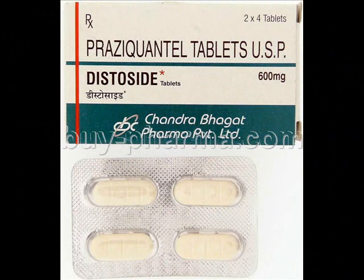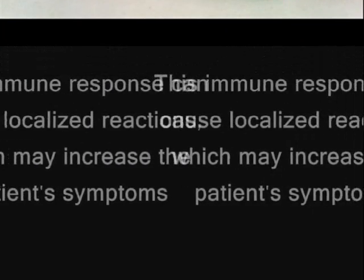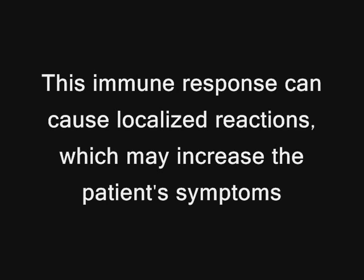Currently, the drug used in most people is praziquantel, or Biltricide. However, it is only effective against adult worms and does not affect eggs or immature worms. Treatment with this drug is simple, with doses based on the patient's weight and two doses given on one day. However, the drug causes rapid disintegration of the worm, which allows the human immune system to attack the parasite. This immune response can cause localized reactions which may increase the patient's symptoms. Corticosteroids are often used to reduce the symptoms of this reaction, but unfortunately this limits the use of praziquantel.